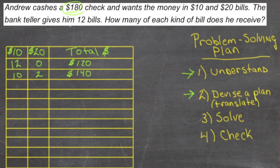That means that if we had nine $10 bills, that'd be 90, and we'd have three 20s, that'd be 60. 90 and 60 would be 150. We're getting closer.